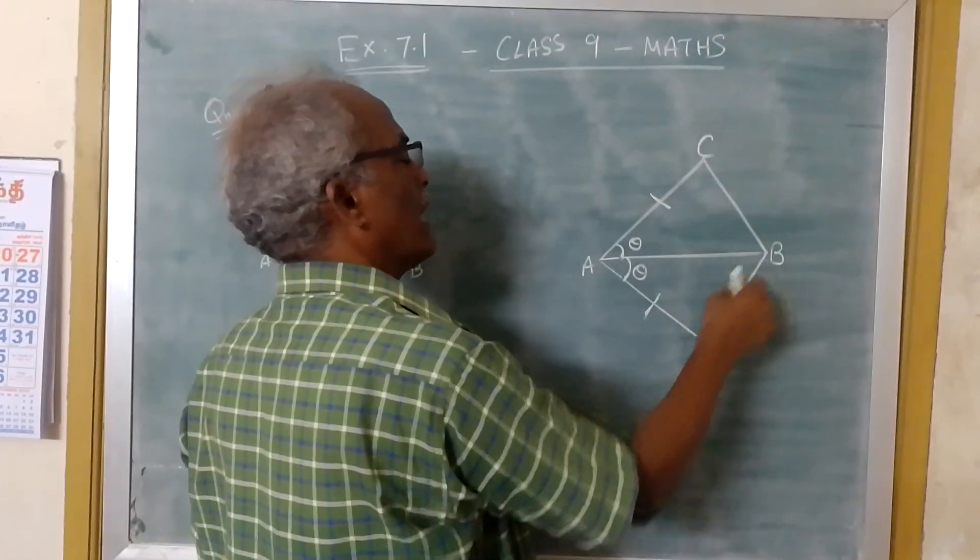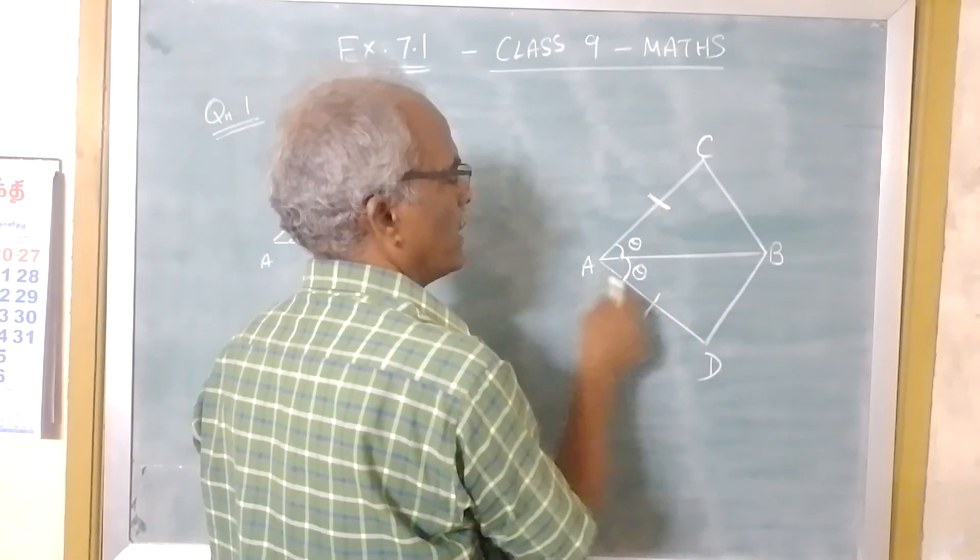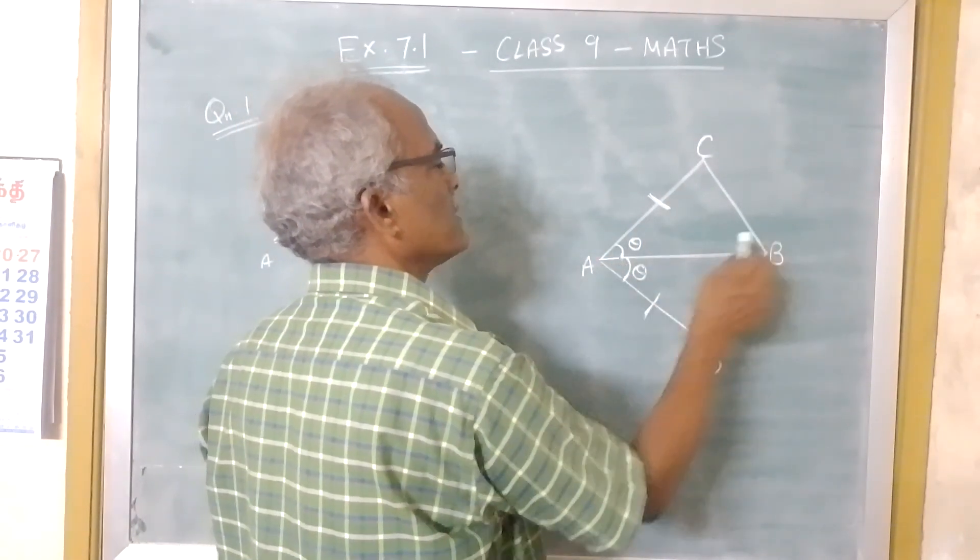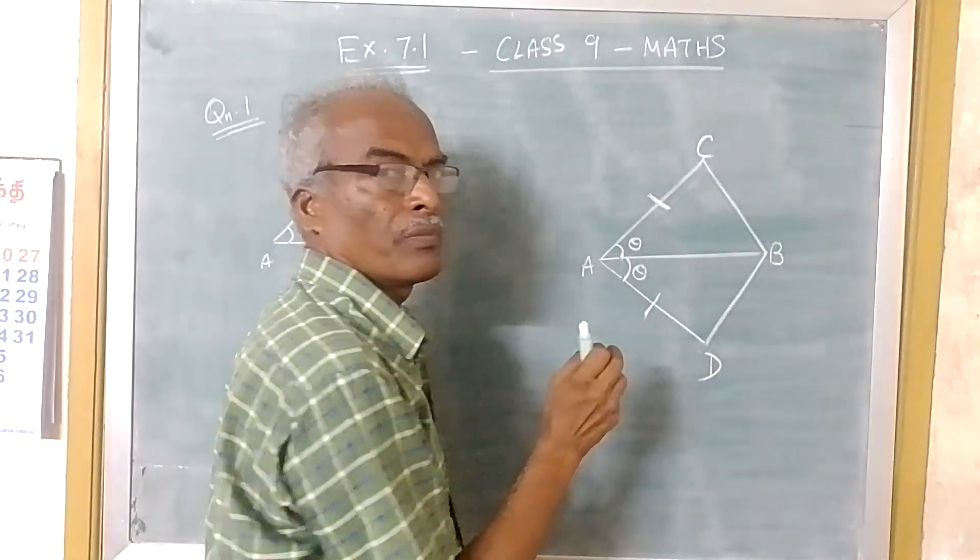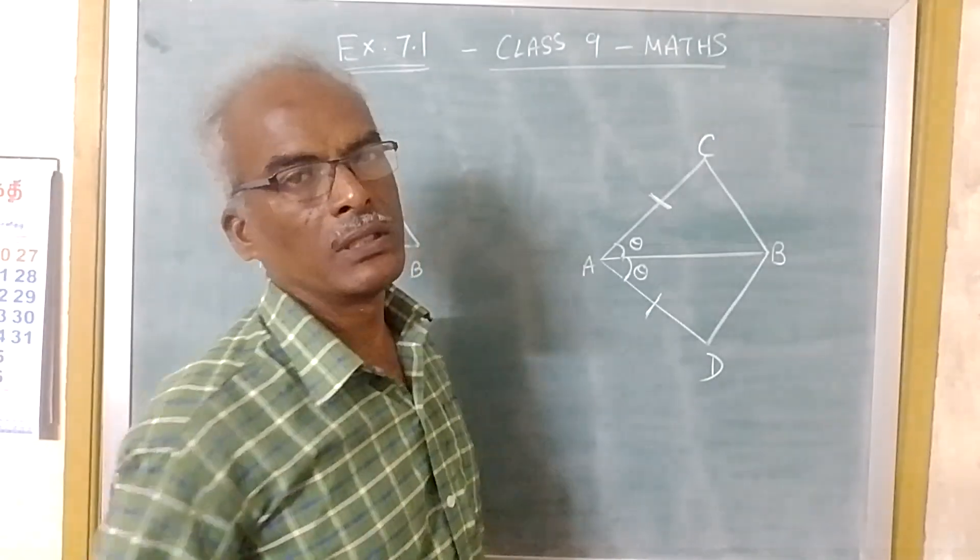So this is the quadrilateral. AC, this side, and AD are equal. This angle A is bisected by the line AB. That means if this is theta, this is also theta.